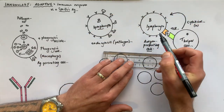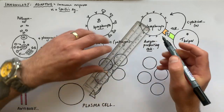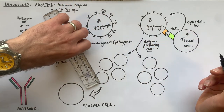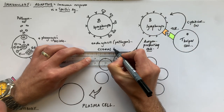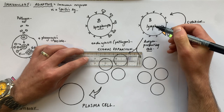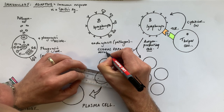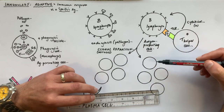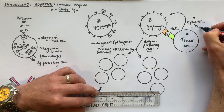The cytokines activate and further promote the B lymphocyte to become activated, which then undergoes clonal expansion. So that B lymphocyte divides by mitosis, producing thousands of genetically identical daughter cells from the original B lymphocyte — promoted by the cytokines secreted from the T helper cell.